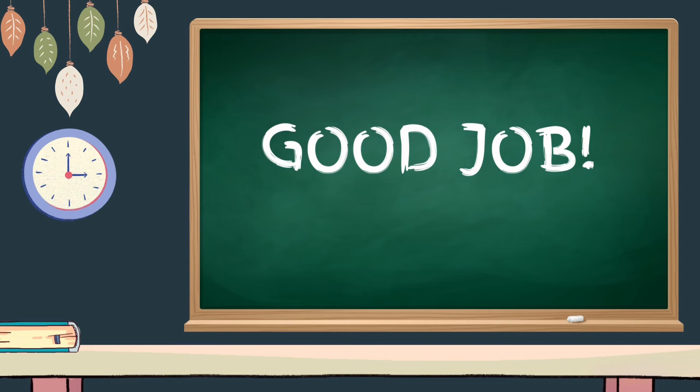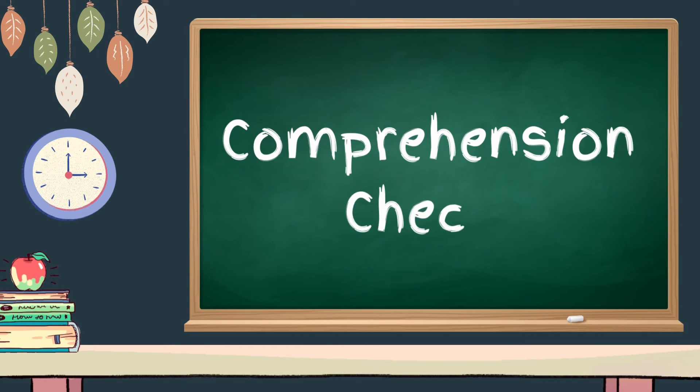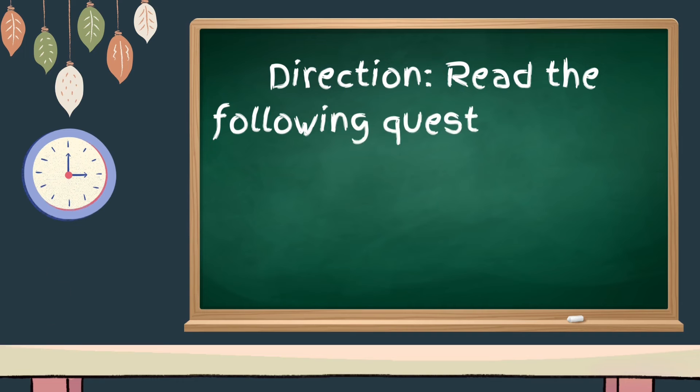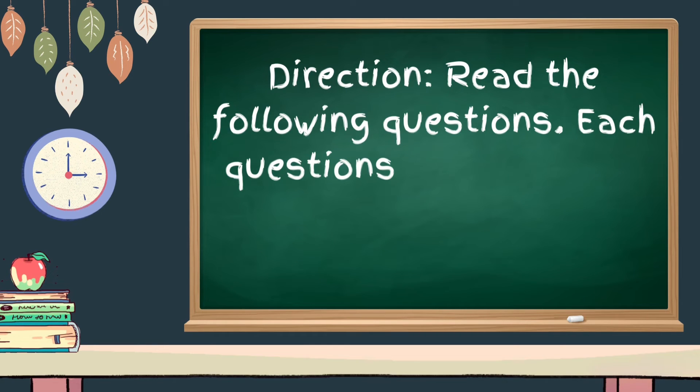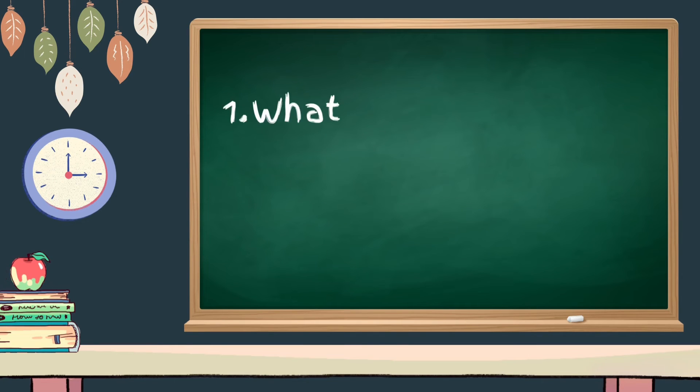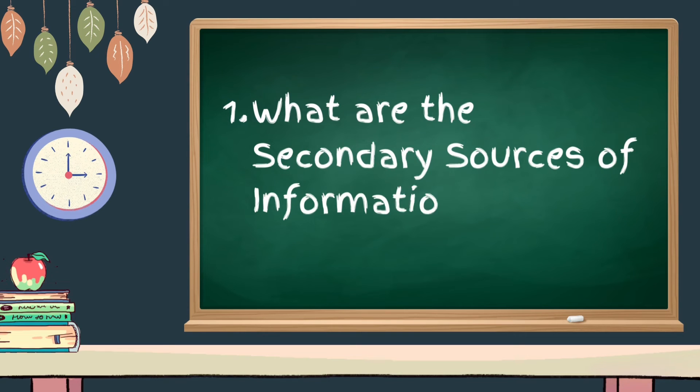Good job grade 6 in finishing our discussion. So right now, I know you can answer our comprehension check. This is how it goes: Read the following question. Each question, you will have 30 seconds to answer. Here's the first question: What are the secondary sources of information? 30 seconds starts now.